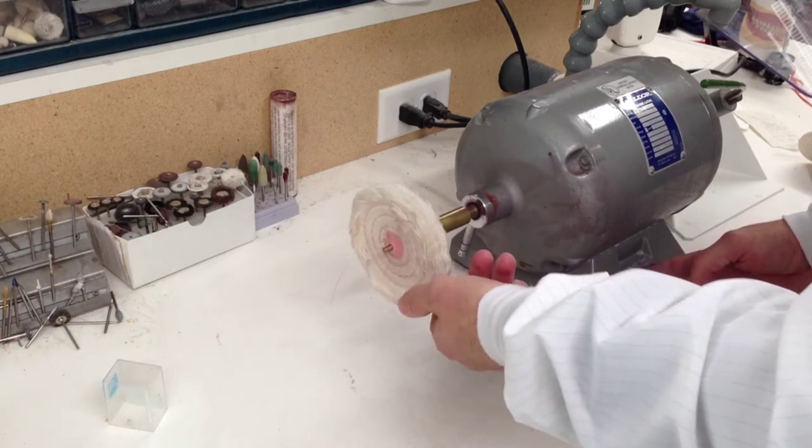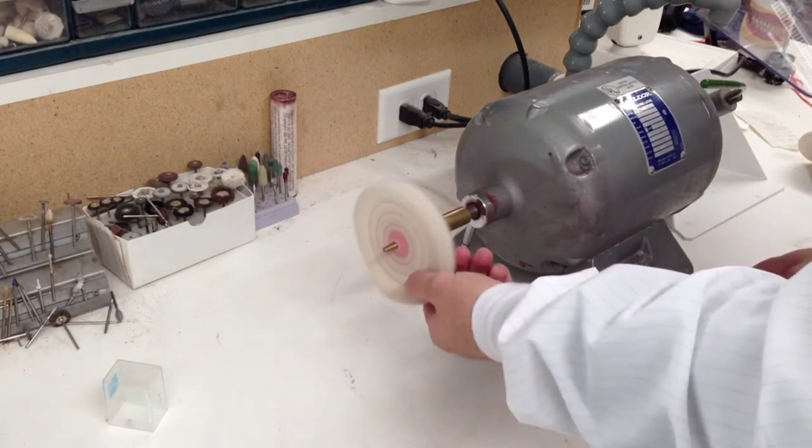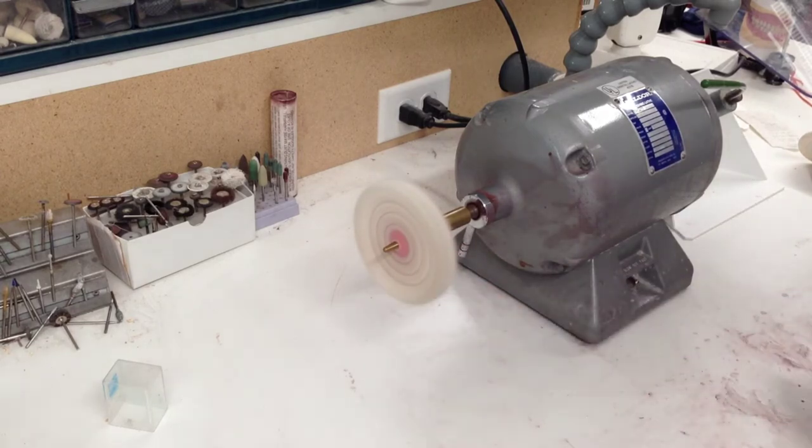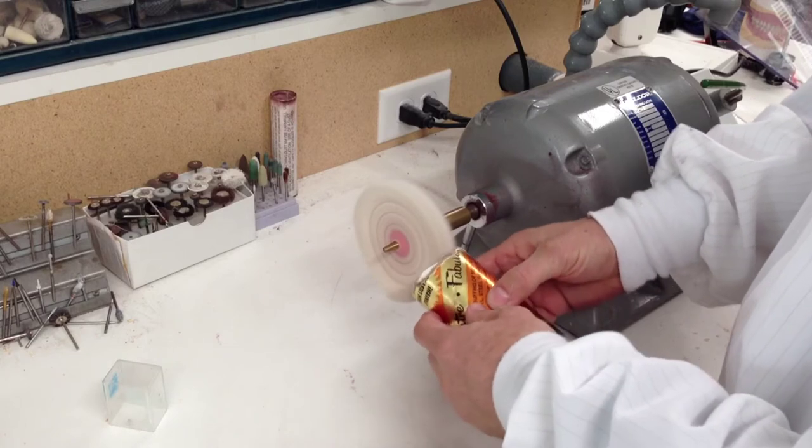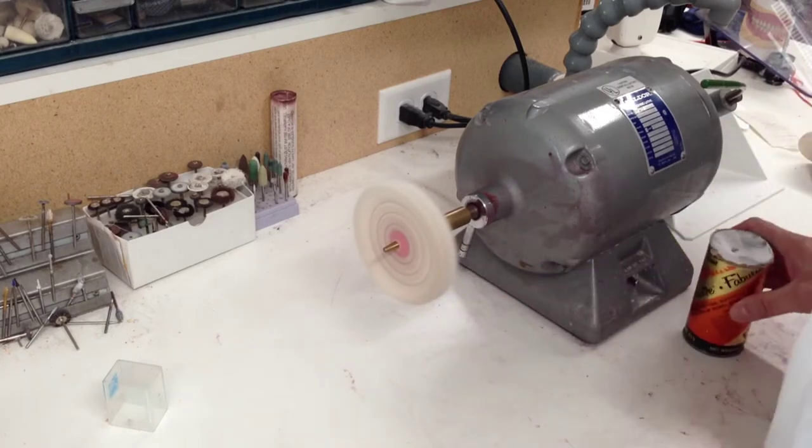You don't have to push very hard; turn the lathe on and it will tighten up on its own. Apply the Fabulustre, run your wheel through it, and at that point you can polish up any of your acrylics.